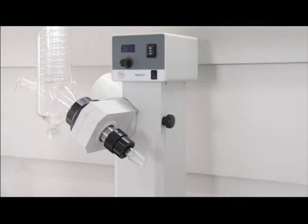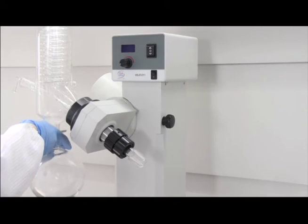Now that the condenser is vertical, we can move on to installing the receiving flask. The receiving flask has a round ball joint. Secure the connection with a metal clamp.